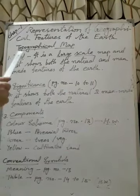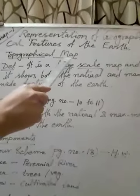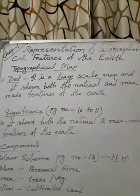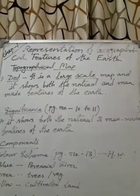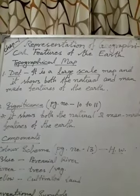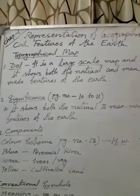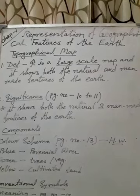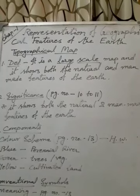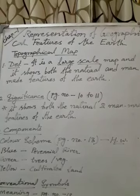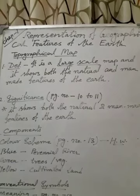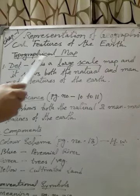A map can represent our whole earth, and the people who do this work are called cartographers. This kind of work, which is both an art and a science, is called cartography. The science of drawing maps is called cartography, and the persons who do this work are called cartographers.